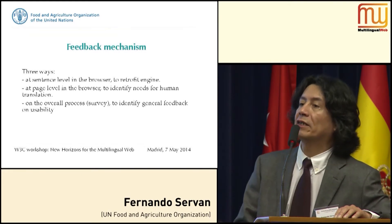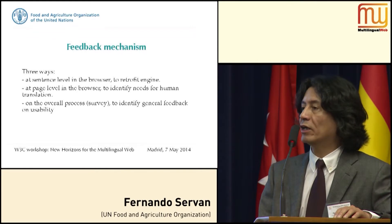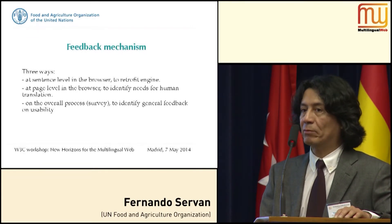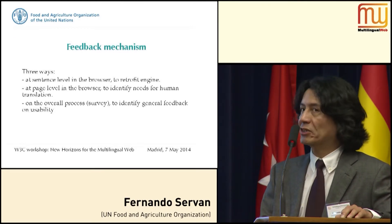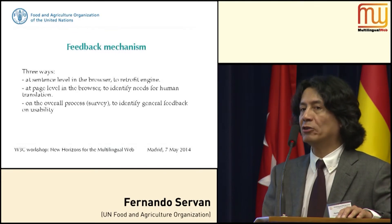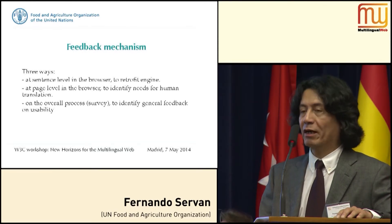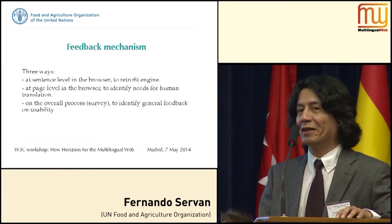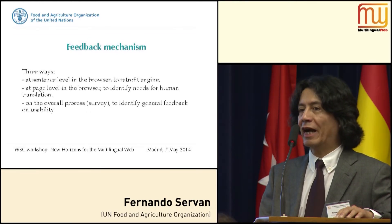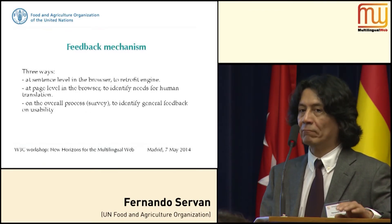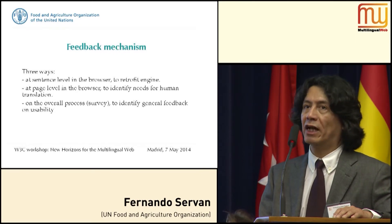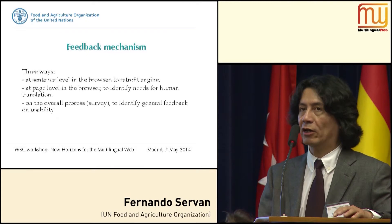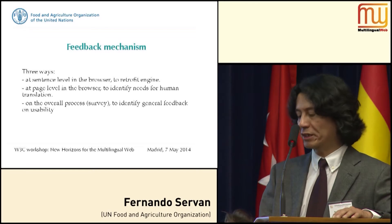The feedback mechanism captures sentence-level ratings on translation quality, which the engine uses to improve results later. At the page level, feedback also gives us an indication of how much users would want that content translated manually by a person. This is very important — even though we are collecting this information now, we will have to come back with a prioritization for human translation. That was one of the key arguments for getting buy-in from the translation service — that this will eventually generate demand for human translation. Additionally, a survey encourages some users to provide general feedback on the implementation itself, not just the linguistics.